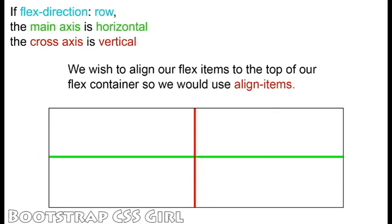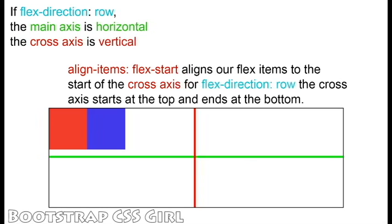Our FlexDirection is set to Row, and we would like to align our FlexItems to the top of our container, so we will use the AlignItems property. To align our FlexItems to the top, we set AlignItems to FlexStart. This moves our FlexItems to the top of our cross-axis. With FlexDirection set to Row, the cross-axis starts at the top and ends at the bottom.